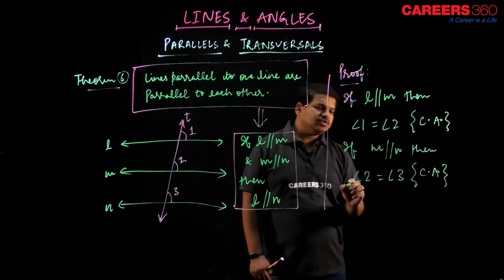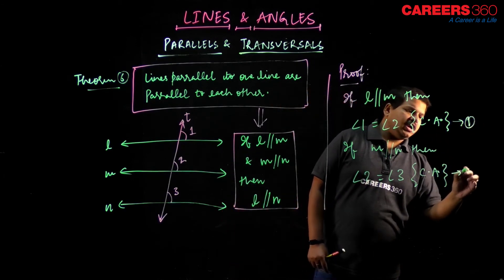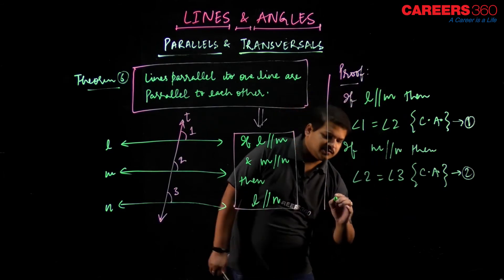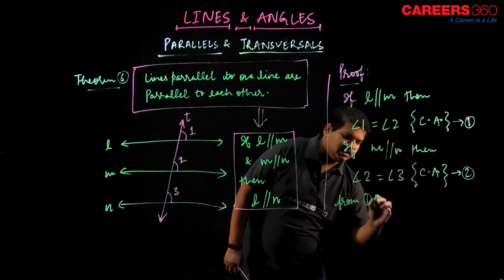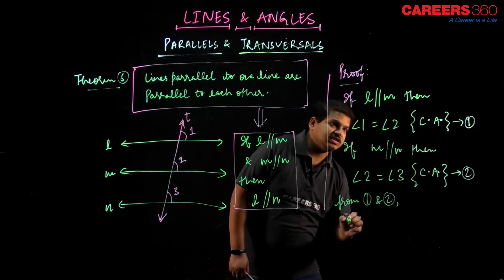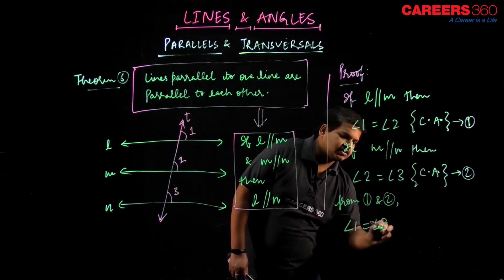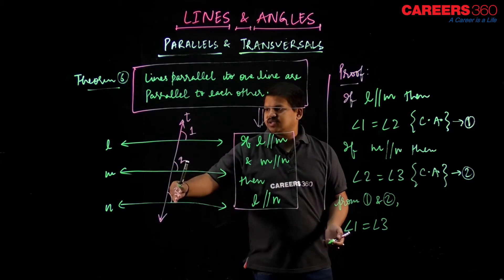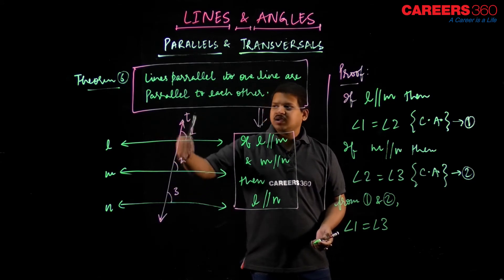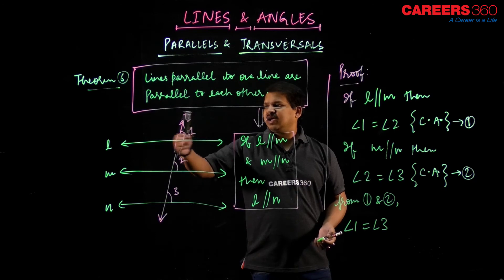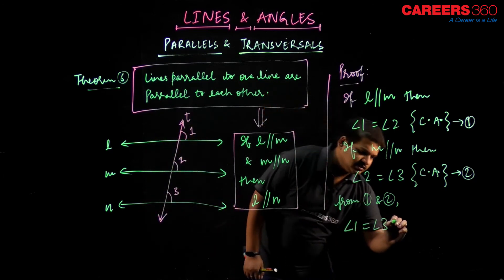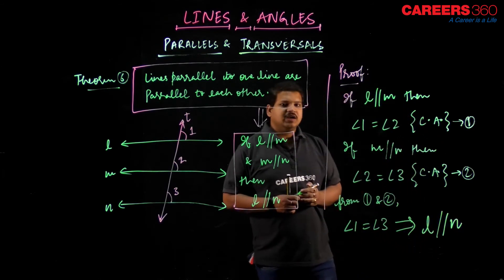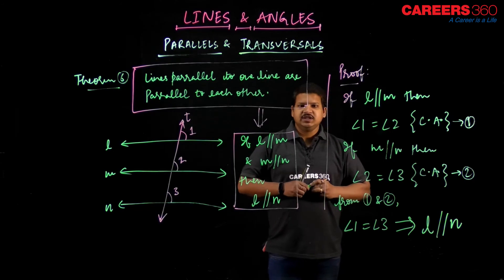From these two results, we can essentially say that angle 1 equals angle 3. If angle 1 equals angle 3, that means they are corresponding angles, and therefore L is parallel to N. So that directly implies L is parallel to N. I hope this theorem is clear to you.